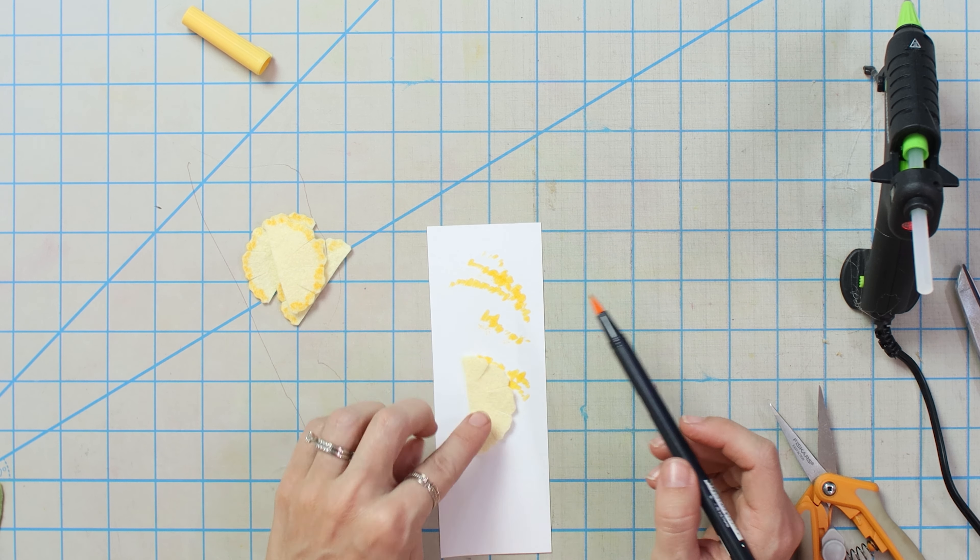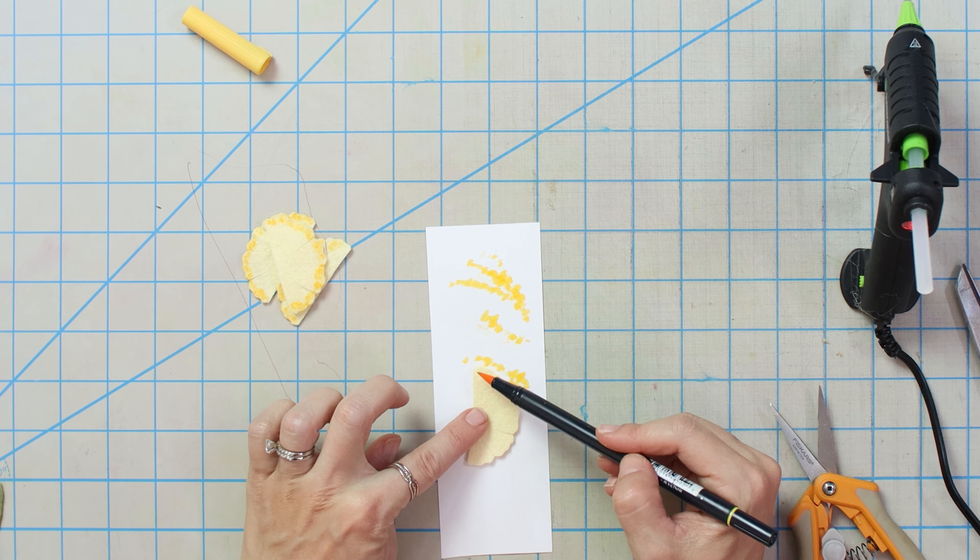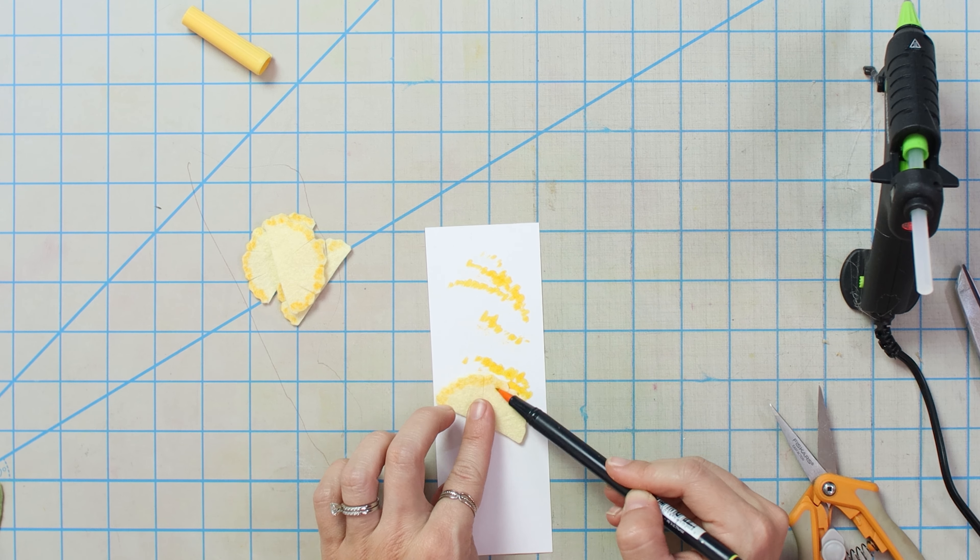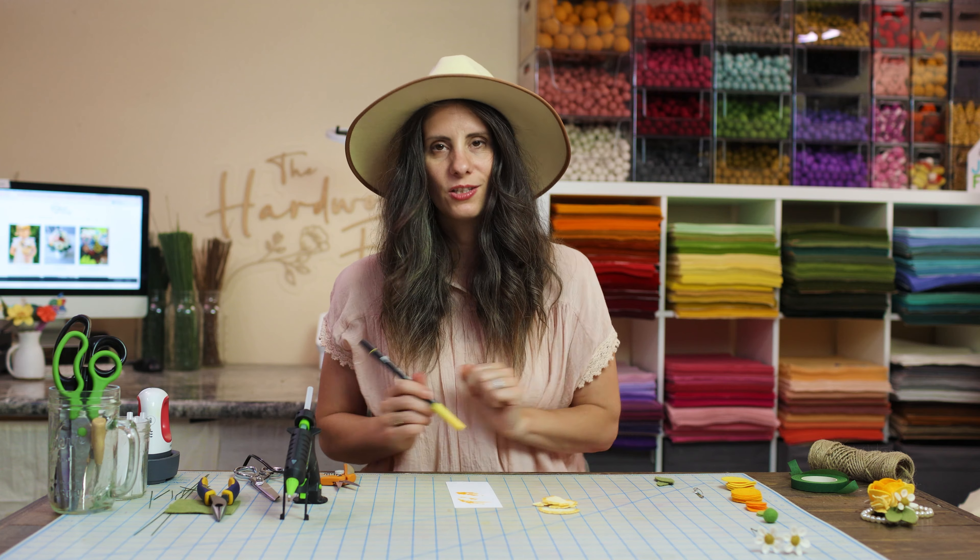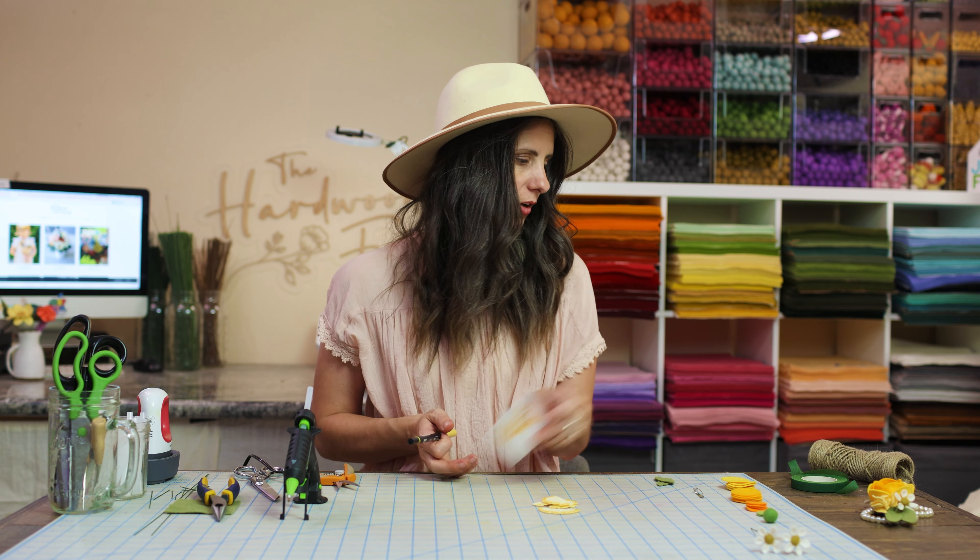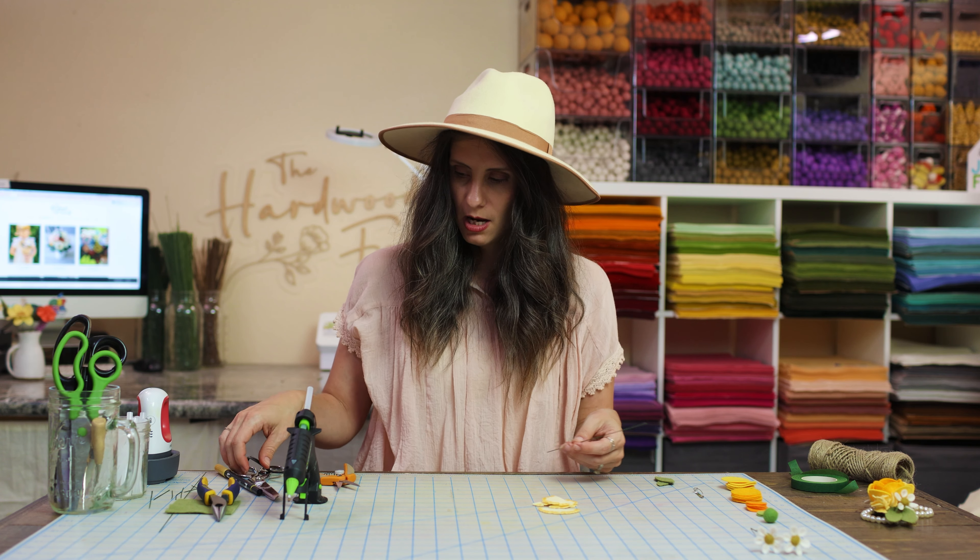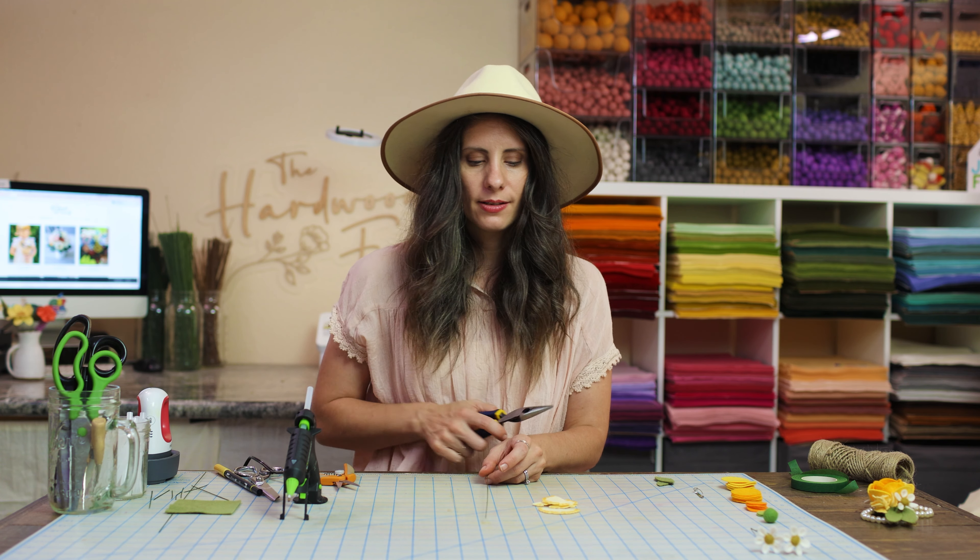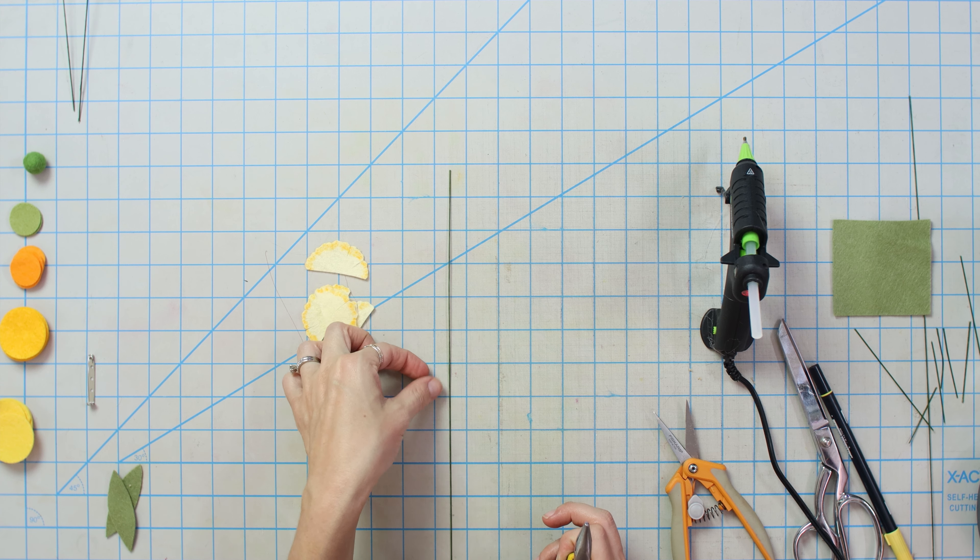Okay, so I'm going to do this on each petal here. Just make sure you have like a scrap piece of paper under it with whatever you're doing. I also have videos on how to use pan pastels and watercolors on your felt. So go check those out if you're interested in different ways that you can dye your flowers. Alright, so we've got all four done. We're going to go ahead and put that aside.